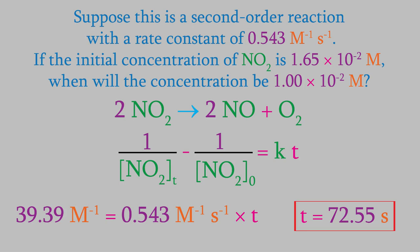Notice that k has units of M⁻¹·s⁻¹. That's different from the units we had for k in a first-order reaction. As I mentioned before, the units of k are different for different reaction orders, so you want to be careful when you determine the units of k.